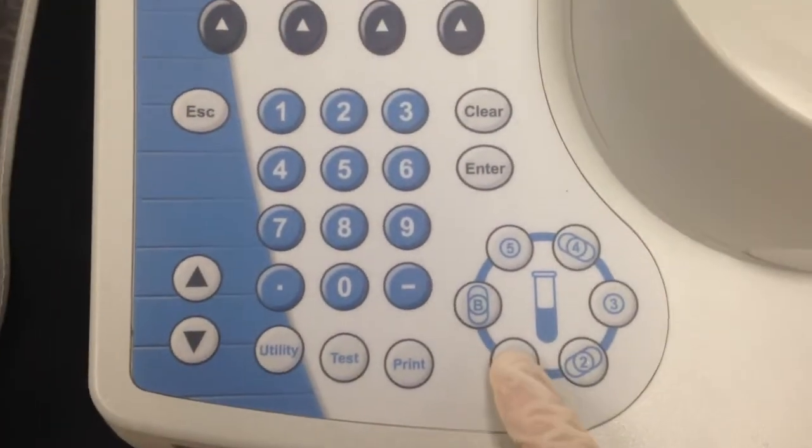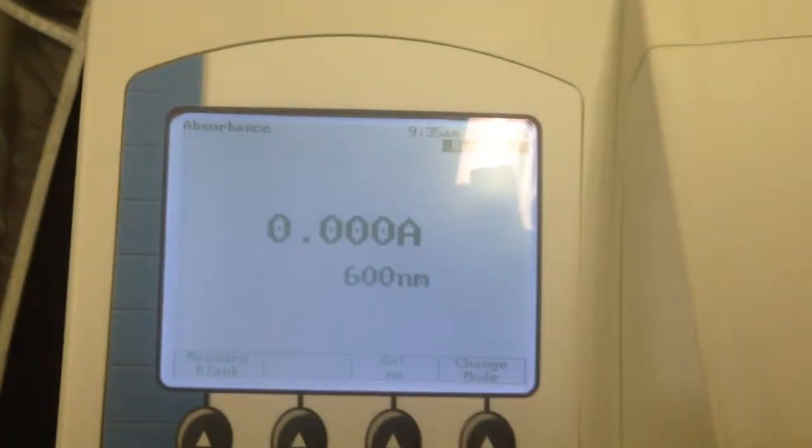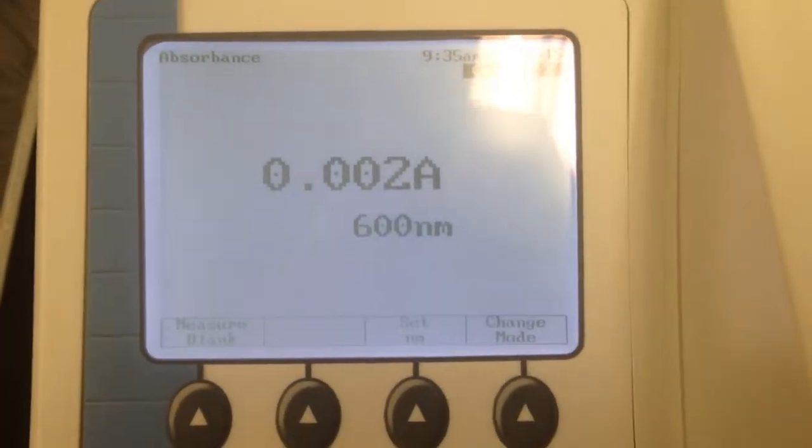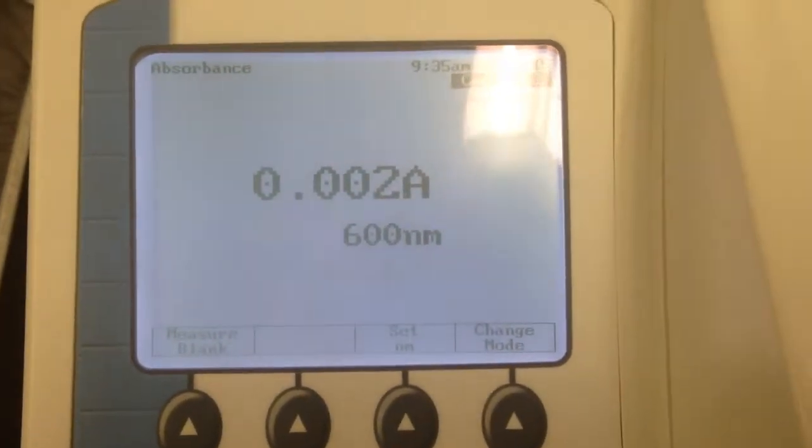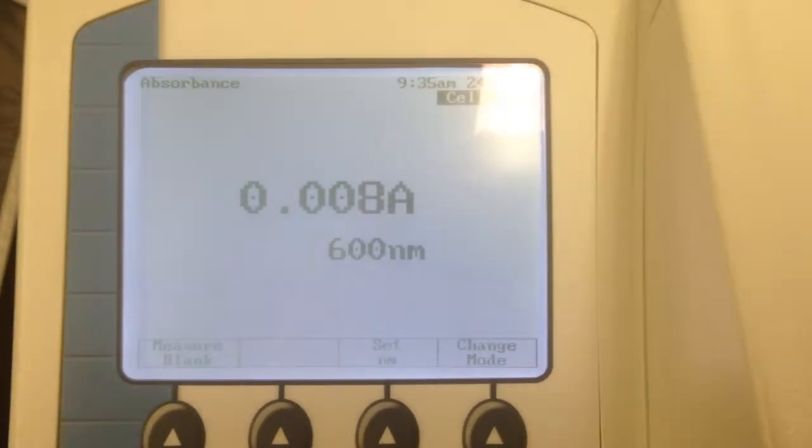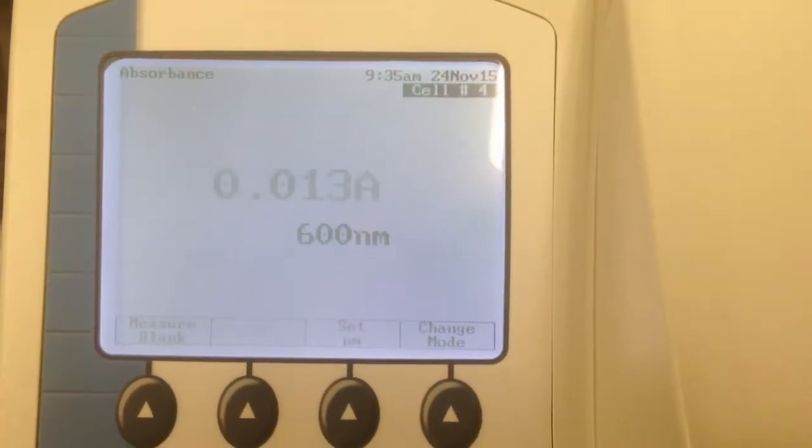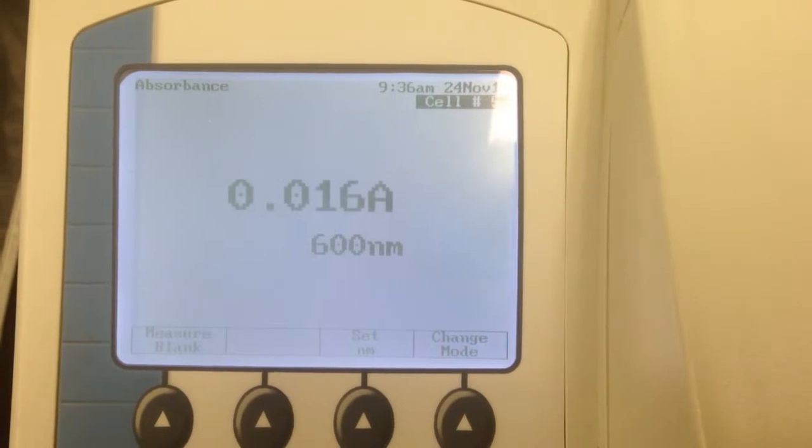After measuring your blank, go ahead and measure all of your samples. You will notice that as the concentration gradient of my samples increases, meaning that the more food coloring is in my samples, the greater the absorbance value.